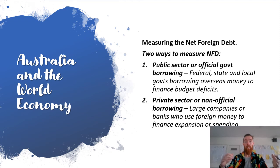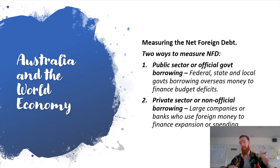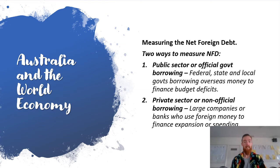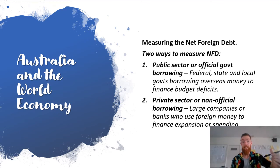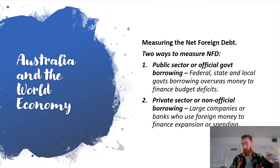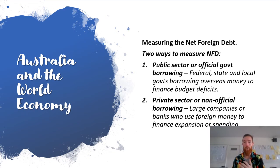There are two main parts of net foreign debt. We've got the public sector, or official government borrowing — the federal, state, and local governments borrowing overseas money to finance budget deficits. And we've also got private sector, or non-official borrowing — companies or banks that use foreign money to finance their expansion or spending overall.